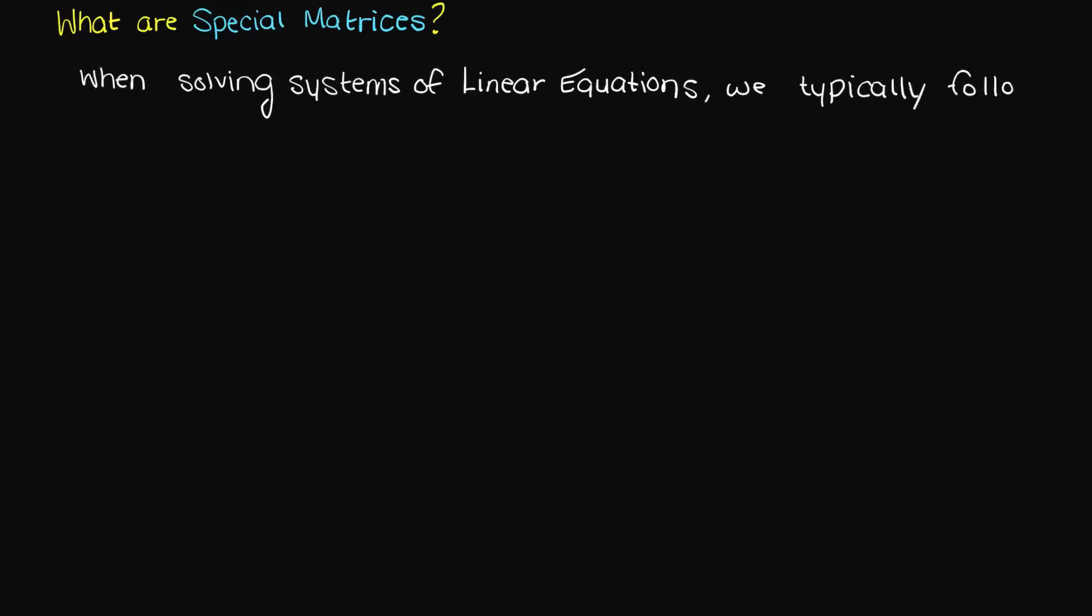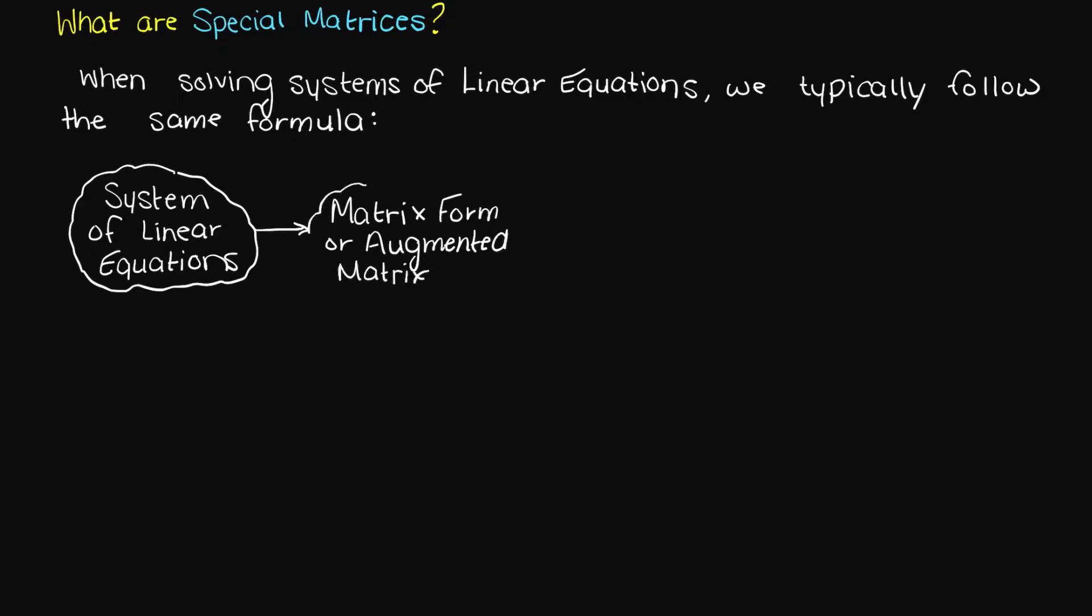When we are solving our systems of linear equations, we roughly follow the same process: convert our equations into matrix form or an augmented matrix, turn that into a special matrix, and then solve for every variable.